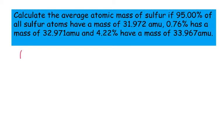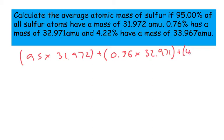So firstly we're going to do brackets 95 times by 31.972 plus brackets 0.76 times by 32.971, and finally 4.22 times by 33.967. Just about got it in there. And then divide the whole lot by 100.